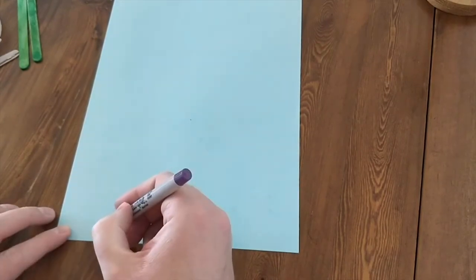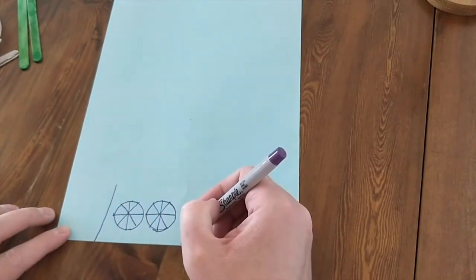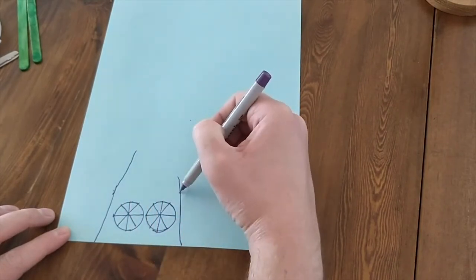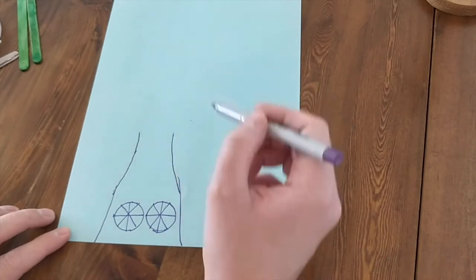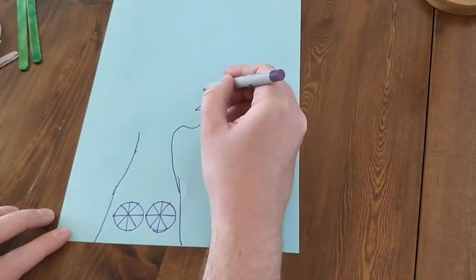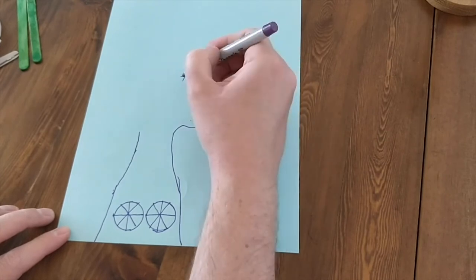So what we need to do next is draw our vegetable which for us today is going to be a piece of broccoli. Now you guys are going to be fantastic artists and much better than me. But the most important thing is that we draw out that outline for our piece of fruit or veg.